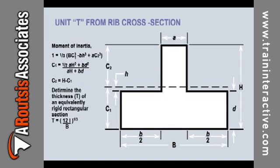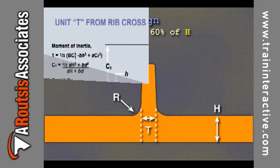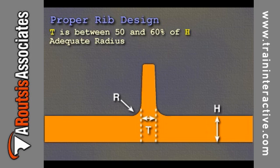Many material suppliers provide guidelines for recommended rib thickness, length, angle, and radius. These guidelines give upper and lower limits common to that specific material. A properly designed rib has about 50 to 60 percent of the wall thickness with an adequate radius.